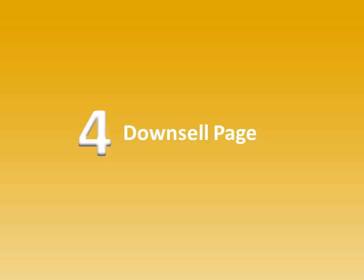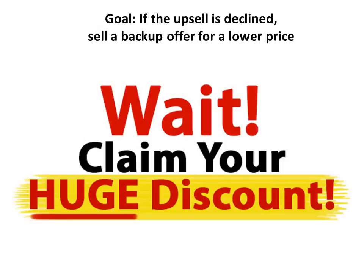If they say no to your main offer or the upsell offer, there's still a way to avoid leaving money on the table, and that is showing them a downsell page. A downsell page shows them an offer at a lower price than the upsell — essentially saying, 'You don't want to spend this much? What if I could get it to you for less, or a lighter version of it at a lower cost?' A percentage of people will take you up on that, so it's really leaving money on the table to just let people go without offering this.